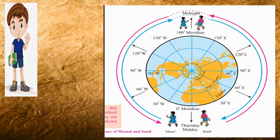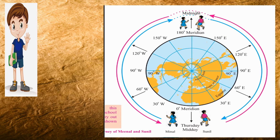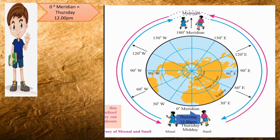Let's begin Module 2 by understanding Sunil's journey with the help of an image. Sunil is moving towards the eastern direction. When Sunil is at the 0 degree meridian, the timing is Thursday afternoon 12 o'clock — the same as Meenal was having. So Sunil started his journey from the 0 degree meridian on Thursday at 12 o'clock in the afternoon.